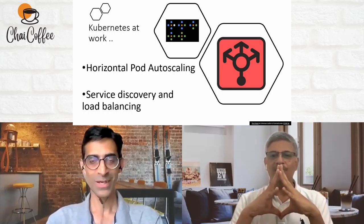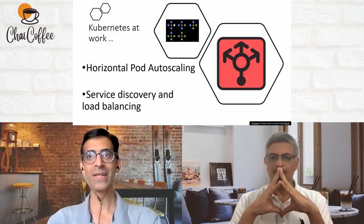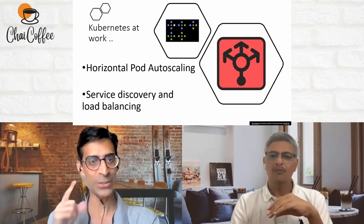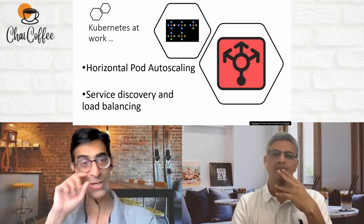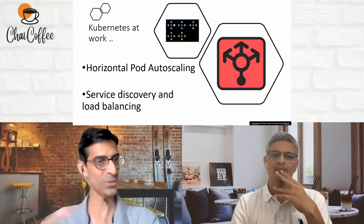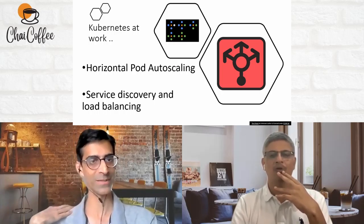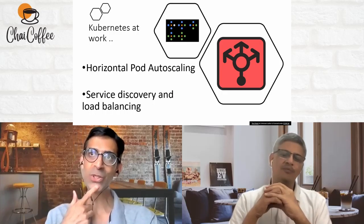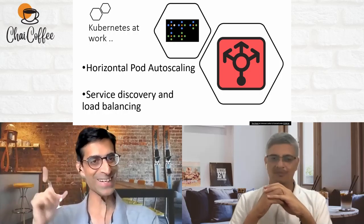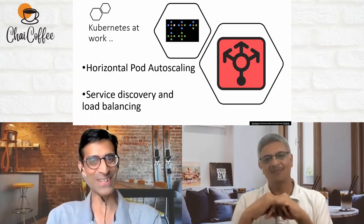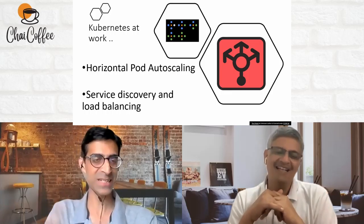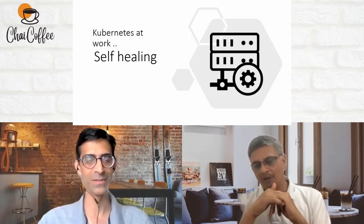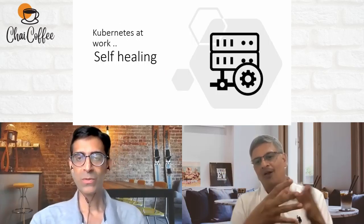Service discovery, service registry, and load balancing are all taken care of by Kubernetes, distributing network traffic across the entire cluster deployment. And all of this — auto-scaling, service-to-service communication — is managed declaratively. You don't have to write a piece of code or a bunch of scripts. That's what makes it amazing.